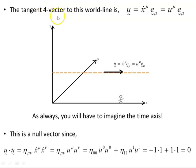So the tangent four vector to this world line, the vector u, is x dot mu e mu. I'm just writing this out in full basis form. Most of the time for this video and the next one, I'm just going to concentrate on the components. But in its full form, here's the vector here, which is difficult to define, but we're going to define through the photons four momentum. As always, you'll have to imagine the time axis.